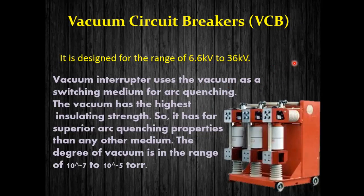The vacuum circuit breaker (VCB) is extremely popular for voltage ranges between 6.6 kilovolts to 36 kilovolts. The vacuum interrupter uses vacuum as the arc extinguishing medium. Vacuum has the highest insulating strength since it does not contain any molecules of air, giving it far superior arc quenching properties than any other medium. The degree of vacuum is in the range of 10⁻⁷ to 10⁻⁵ torr.